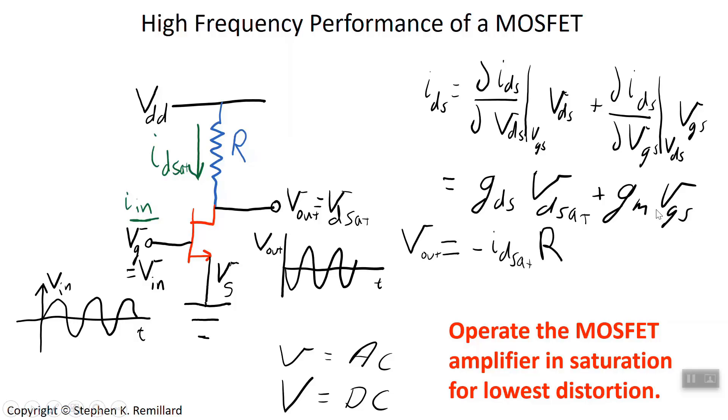The drain source current also depends on the gate source voltage times this dependence of drain source current on gate source voltage. That's what we were calling the mutual transconductance. Actually, if you are in saturation, we'll talk about that being a GM sat. This gives us the output voltage. If you happen to know the current passing through the whole system from resistor to MOSFET to ground, you multiply that current by the resistance, and you have the output voltage.